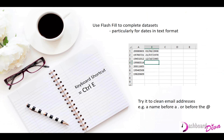Neil from the audience adds a useful tip: when working with time, always use the [h]:mm:ss format with square brackets around the 'h,' which allows time to count above 24 hours. Joe confirms this is a good tip.